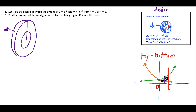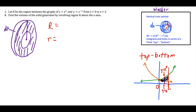Because there's a gap between the x-axis and region R, the washer is hollowed out in the middle. We need to define a big radius and a small radius. Thinking top minus bottom: the big radius goes from the axis all the way to the outer curve. The distance between the x-axis (y equals zero) and y equals e to the x is e to the x minus zero, which is just e to the x. You can use top minus bottom or simply observe the distance from the axis to the curve equals the function.